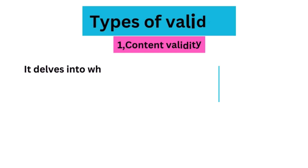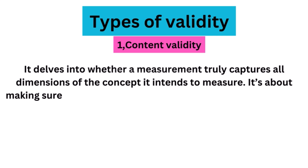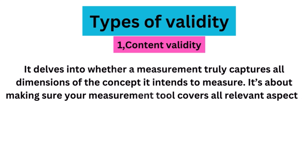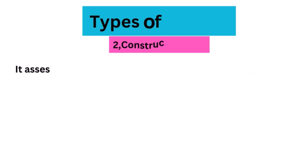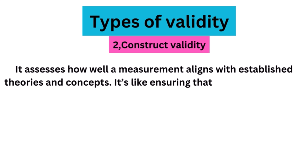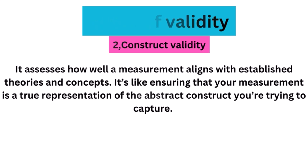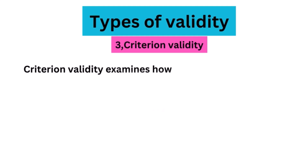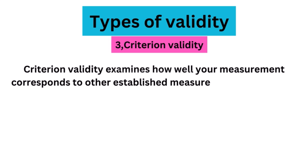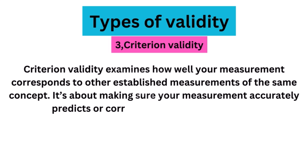Let's explore the various types of validity. Content validity delves into whether a measurement truly captures all dimensions of the concept it intends to measure, making sure your measurement tool covers all relevant aspects comprehensively. Construct validity assesses how well a measurement aligns with established theories and concepts — ensuring it is a true representation of the abstract construct you're trying to capture. Criterion validity examines how well your measurement corresponds to other established measurements of the same concept, making sure it accurately predicts or correlates with external criteria.